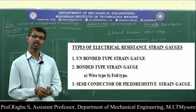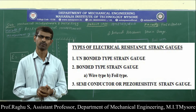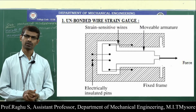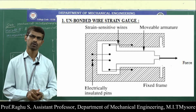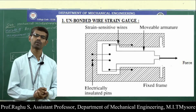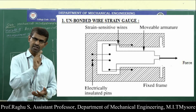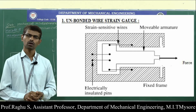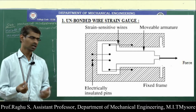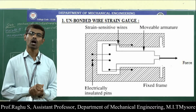Now let us discuss the types of electrical resistance strain gauges. We have three types: unbonded type, bonded type, and semiconductor type. The unbonded type strain gauges do not have any backing material. It consists of a fixed frame and a movable platform. The wires are connected to the fixed frame and movable platform through insulated pins. When the load acts on the movable frame, two wires are in tension and two wires are in compression. Due to deformation, the resistance of the wire changes, and this change in resistance is measured by using the Wheatstone bridge, which can be taken as the measurement of strain.